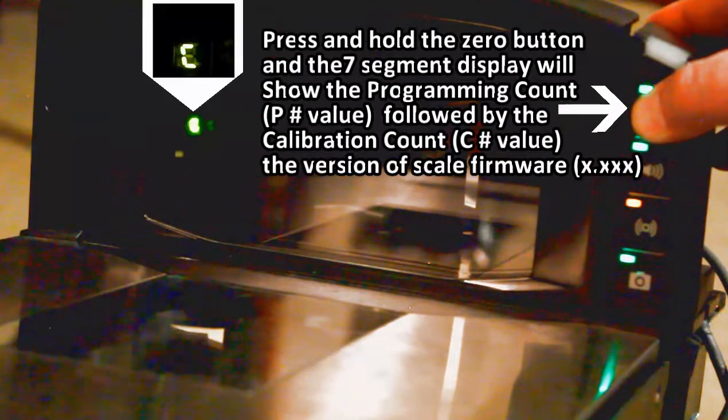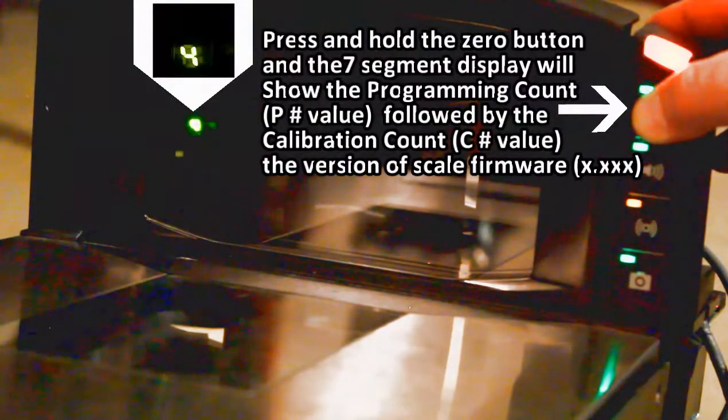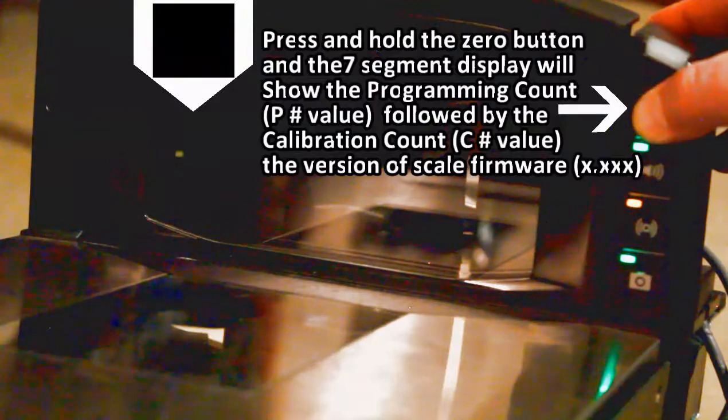To obtain the calibration count and programming count for the MP7000 scale for electronic sealing, since there's no wire seal on the device, you obtain these values by pressing and holding the zero button on the device. Then you observe the seven segment display window to capture those values.